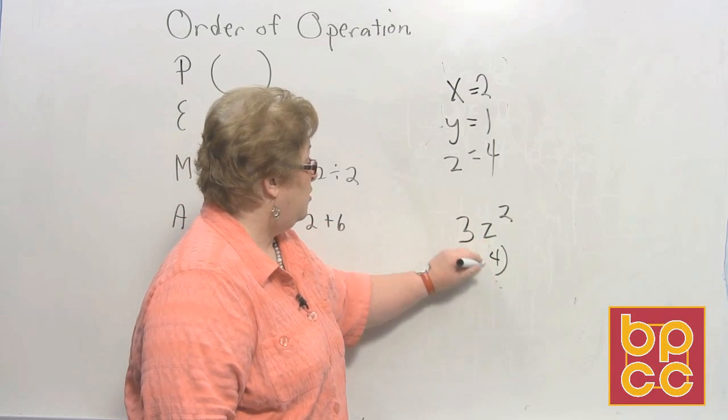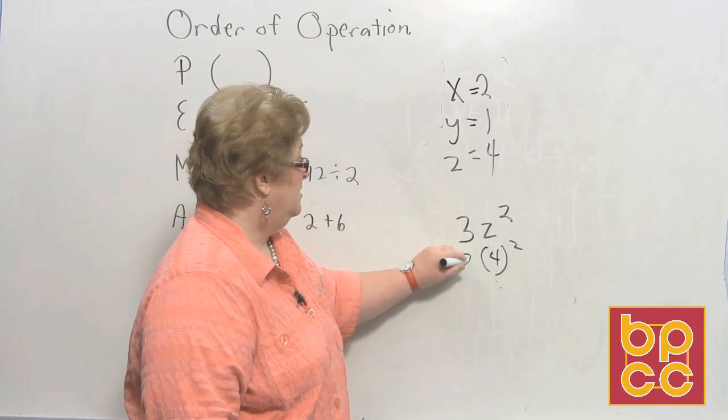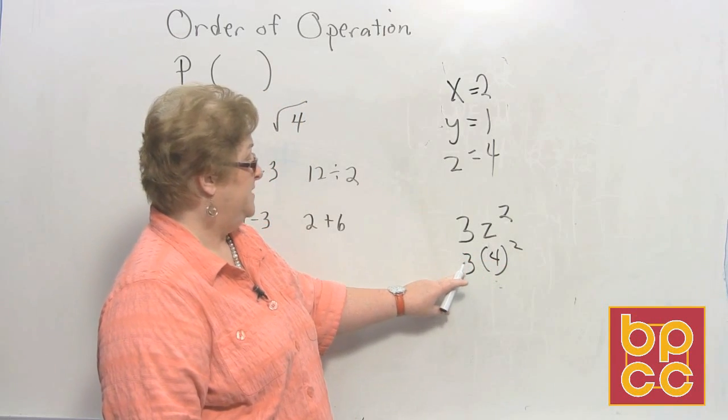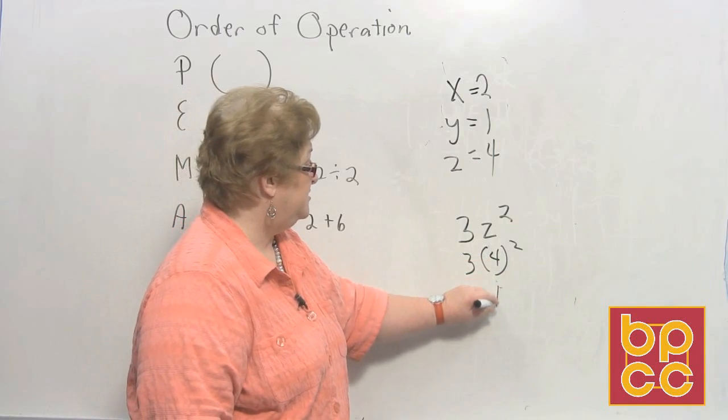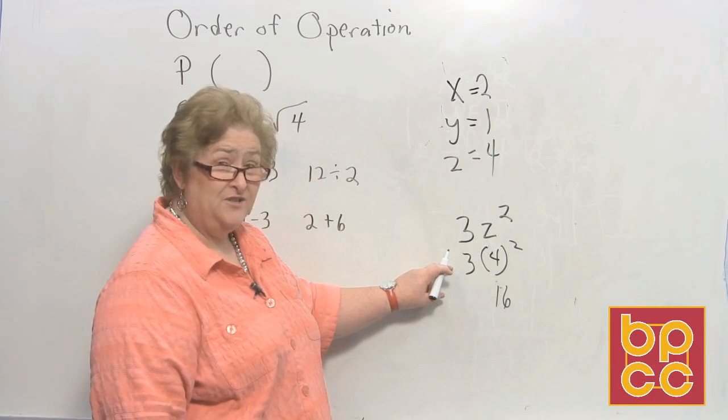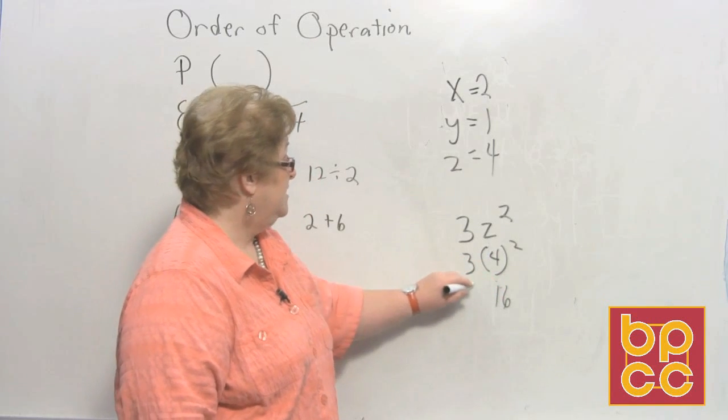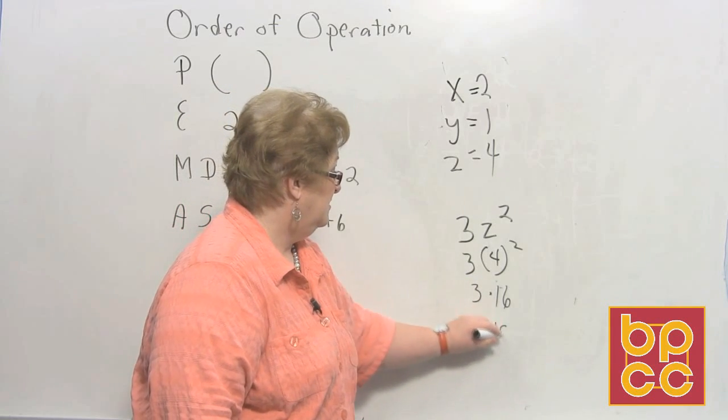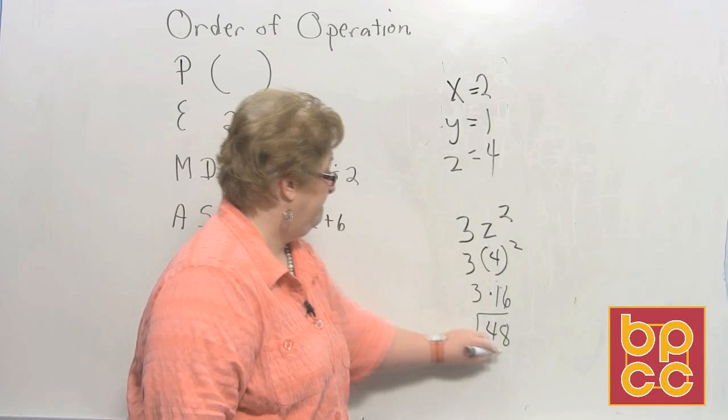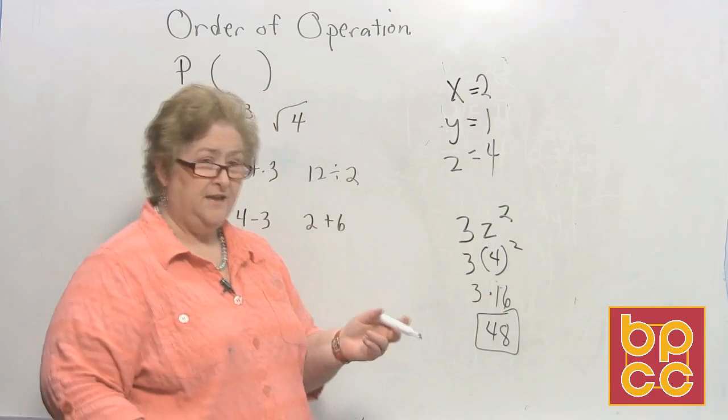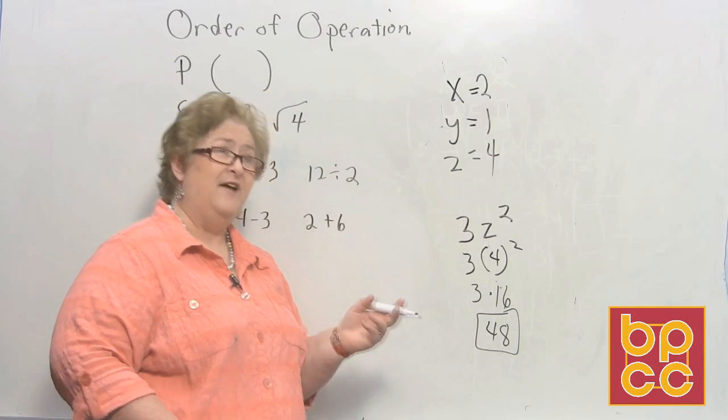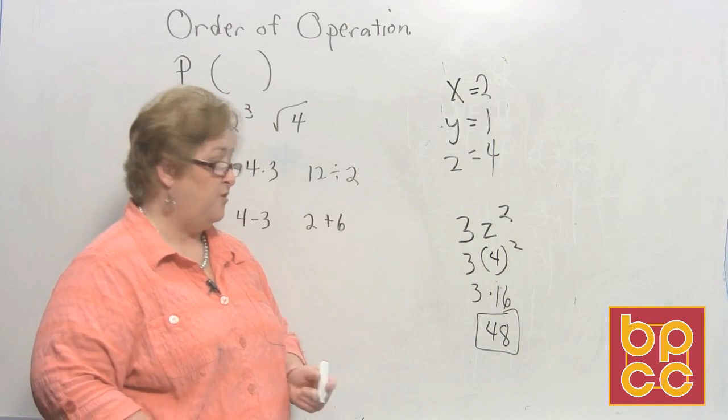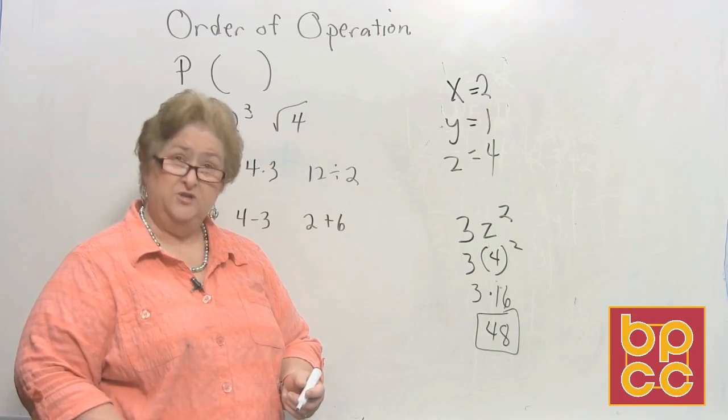So we have 4 squared, which we'll take care of, and then we're going to multiply by 3. 4 squared is 16. That 3 is hugging, so that means multiply. And 3 times 16 is 48. All right. So in this lesson, we've done order of operation. We have evaluated some algebraic expressions and used different values for x, y, and z to see if you can solve. Good job. We'll move on to our next video.